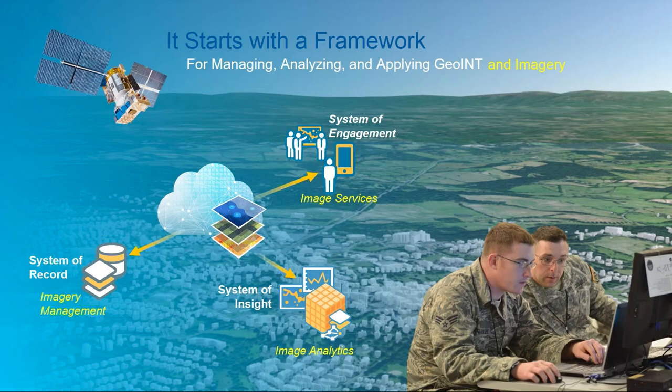Overlaying this on imagery: your system of record is all about imagery management — working with massive volumes of imagery in libraries and archives, in real time as it comes in from the sensor. Your system of insight covers your imagery analysis, heavy-duty analytics, which are getting more and more powerful. And then finally, imagery services: the ability to access imagery products and intelligence products via web solutions on any device, anywhere.